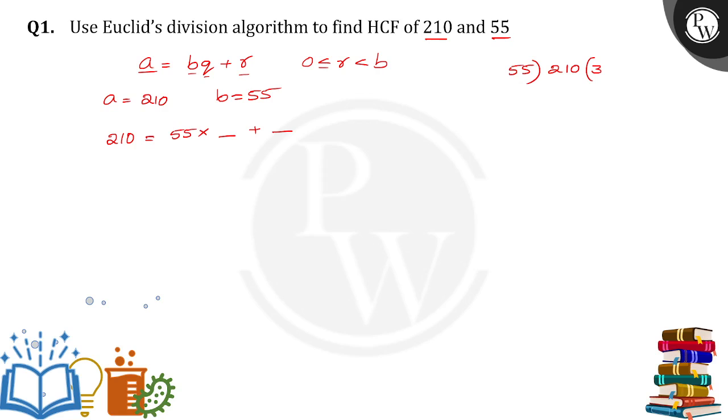So 55 times 3 is how much? 105, right? So the reminder will be 45. Here 3 will be the quotient and 45 will be the reminder.